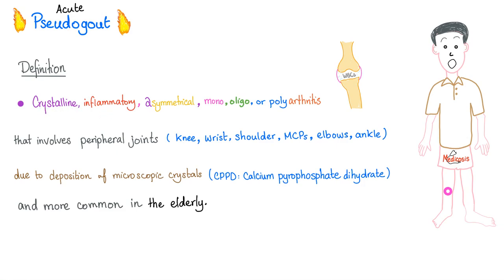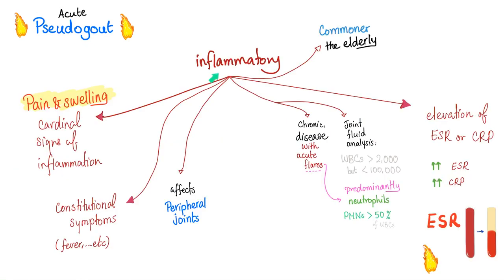Acute pseudogout is a crystalline, inflammatory, asymmetrical mono-, oligo-, or polyarthritis that involves peripheral joints — knee, wrist, shoulder, MCPs, elbow, and ankle — due to deposition of CPPD crystals. They are more common in the elderly. Acute pseudogout is an inflammatory arthritis, so expect all findings of inflammatory arthritis.